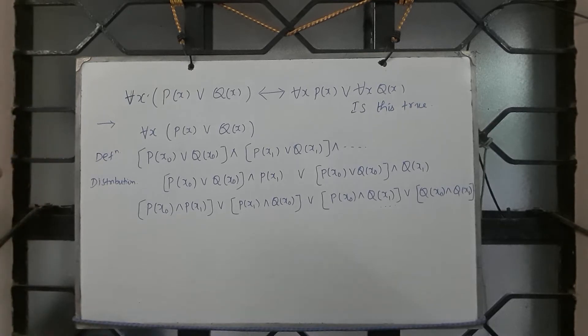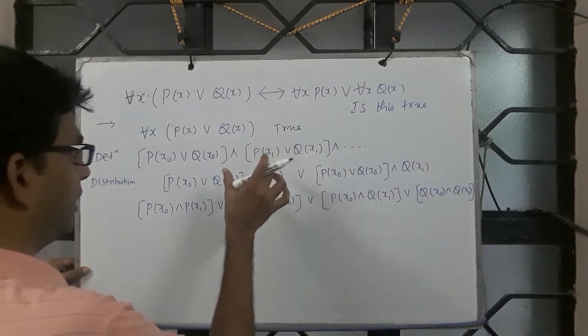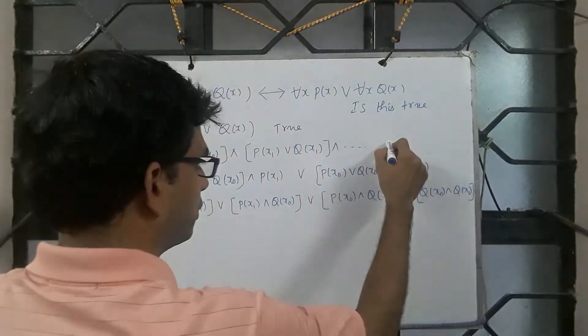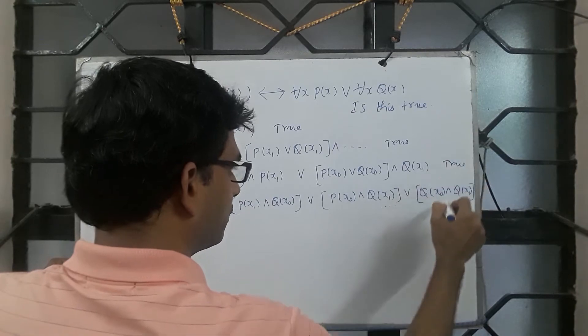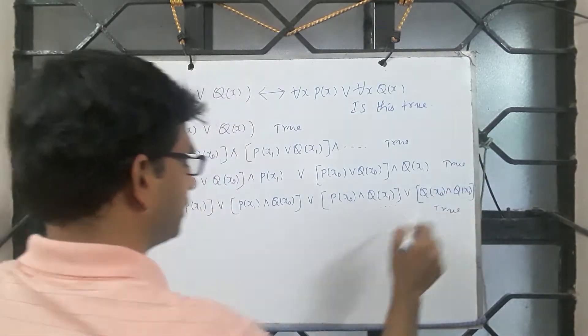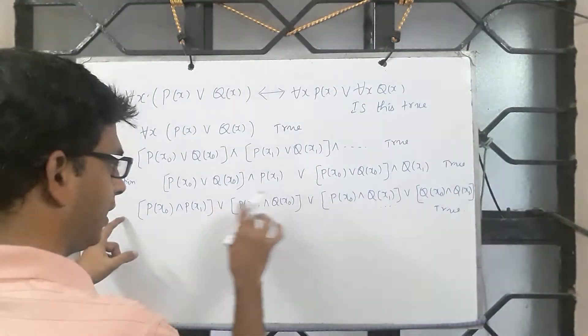Please note you work with the premise which means this is true, and you are only applying the definition. So this is also true, each of this is true. So this is true and each of this is true. Now this is OR in between.